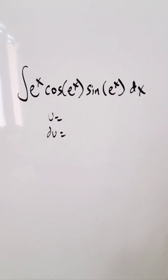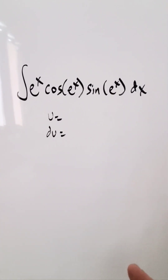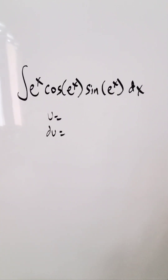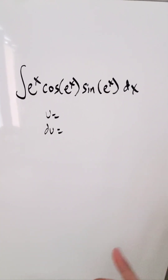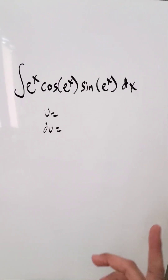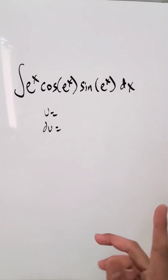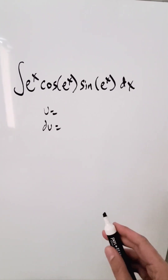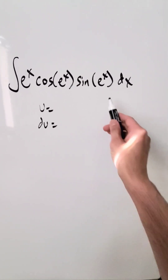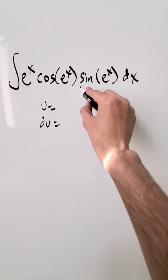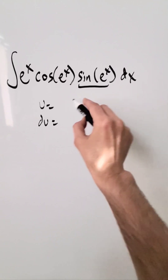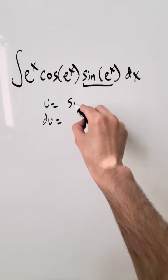Look at this integral: e exponent x, cosine of e exponent x, sine of e exponent x dx. With a good substitution, this question is quite easy. What is that substitution? It's not e exponent x, but sine of e exponent x.